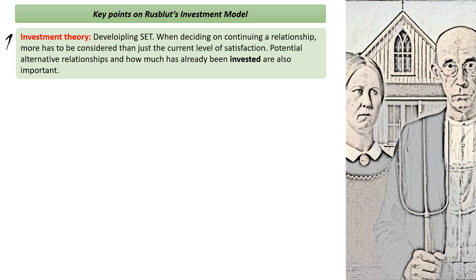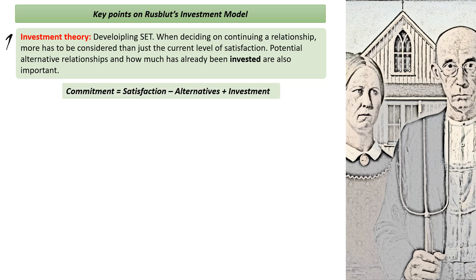We do have to think about alternate relationships, as we've discussed in previous videos, but also we need to consider how much has already been invested into that relationship. For investment theorists, our formula about whether our relationship will continue is as follows: commitment — so whether you decide to stay or leave — is equal to your satisfaction level, the same as social exchange theory, minus the alternatives that are around, so any alternatives will reduce your commitment, but plus investment.